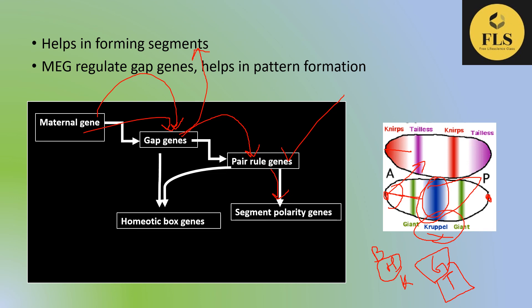In summary, gap genes define the part of the embryo that will later develop into segments in Drosophila. They define the head, thorax, and abdominal regions. If there is a mutation, a segment will be absent and a gap will develop — hence the name gap genes. Gap genes are the first set of zygotic genes activated after fertilization, and their expression results in broad bands in the embryo. We will discuss pair-rule genes, segment polarity genes, and homeotic box genes in coming video lectures.